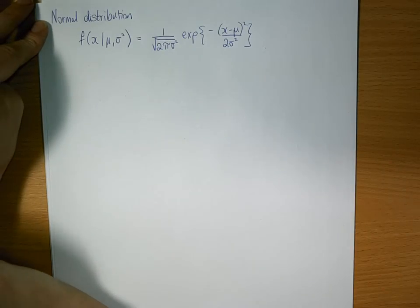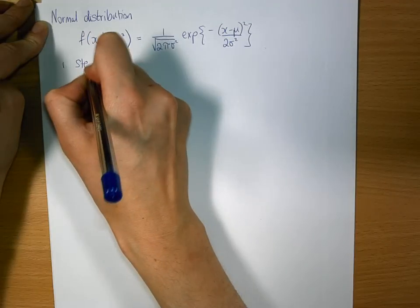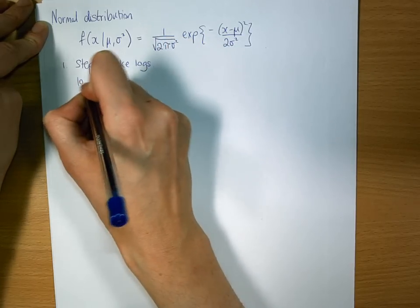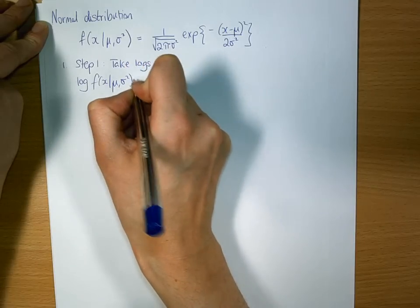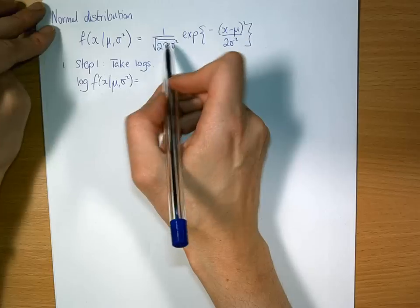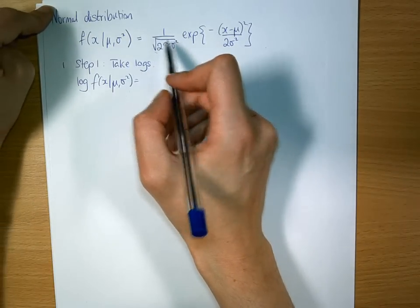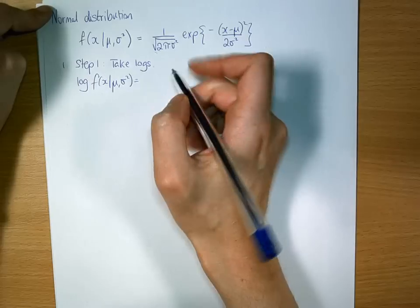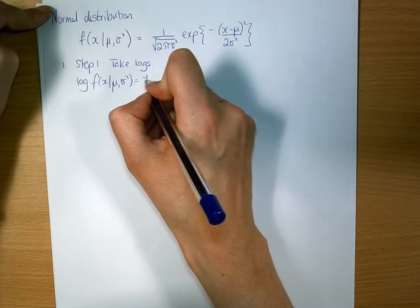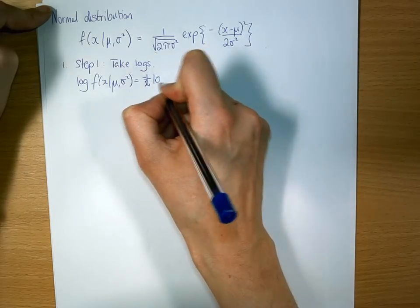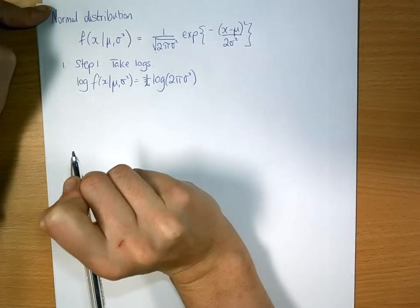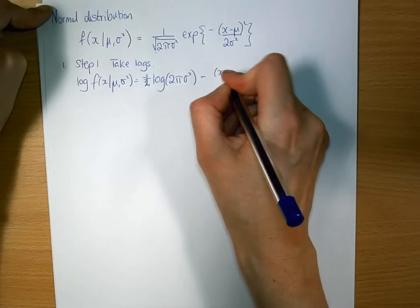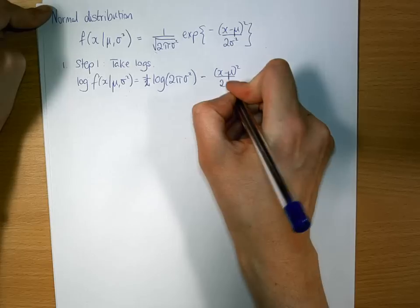As with all the other cases, we do this in steps. Step 1 is take logs. So log of f of x given mu sigma squared equals minus 1 half log 2 pi sigma squared minus, the exponential just cancels out, x minus mu squared over 2 sigma squared.